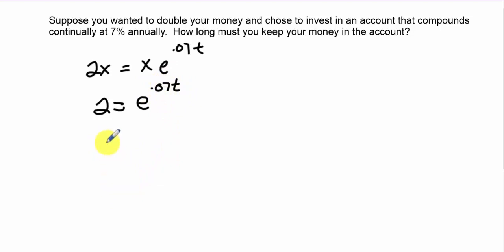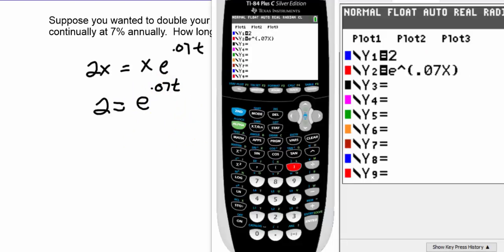Now we've got an issue because we have an unknown power. The only way to solve this at this point is by using a calculator. What I'd like you to do is go to y equals and plug the two sides of the equation into two y equals graphs. One is going to be y equals 2, and then one is e to the 0.07x. Now let's graph this.